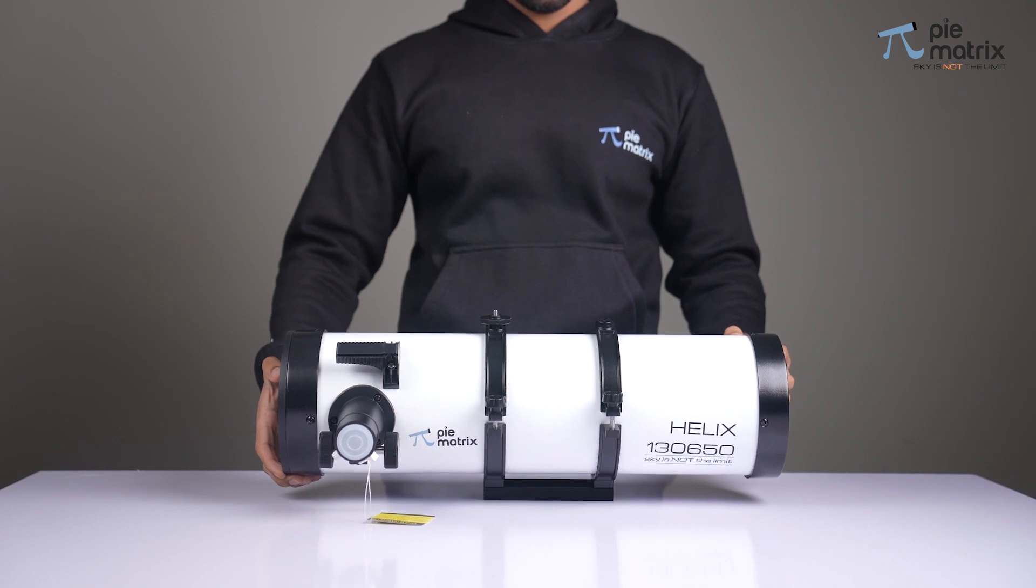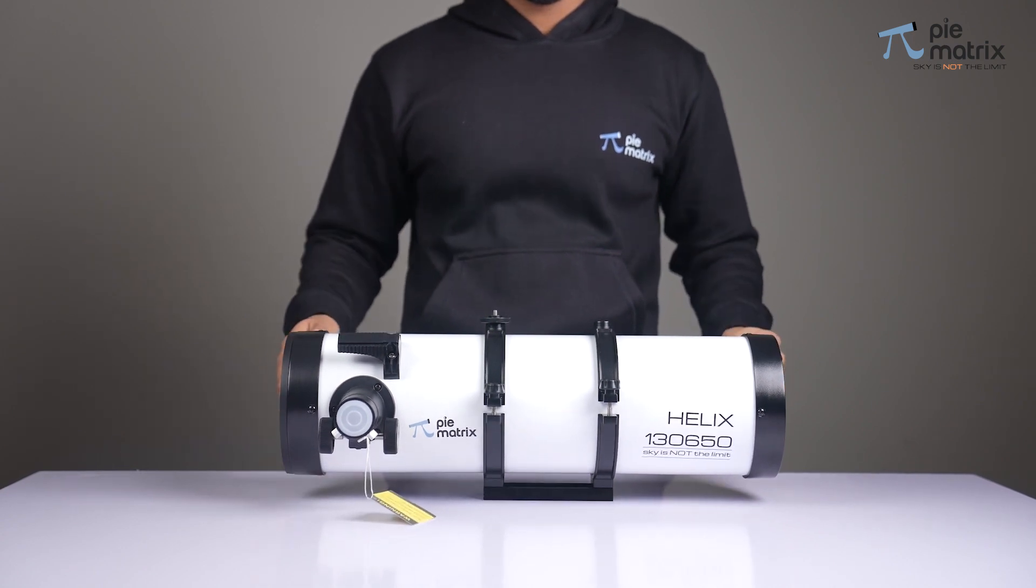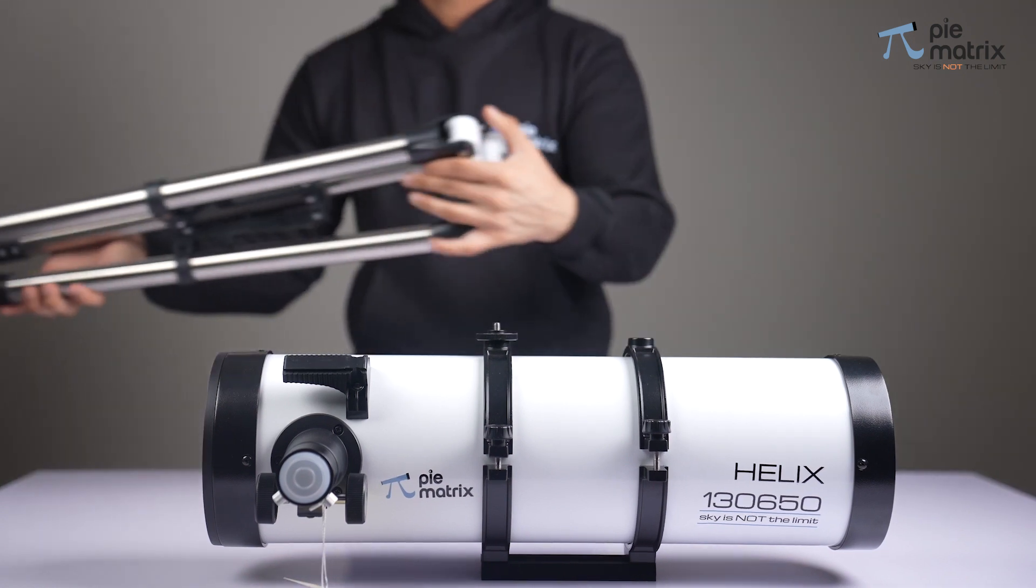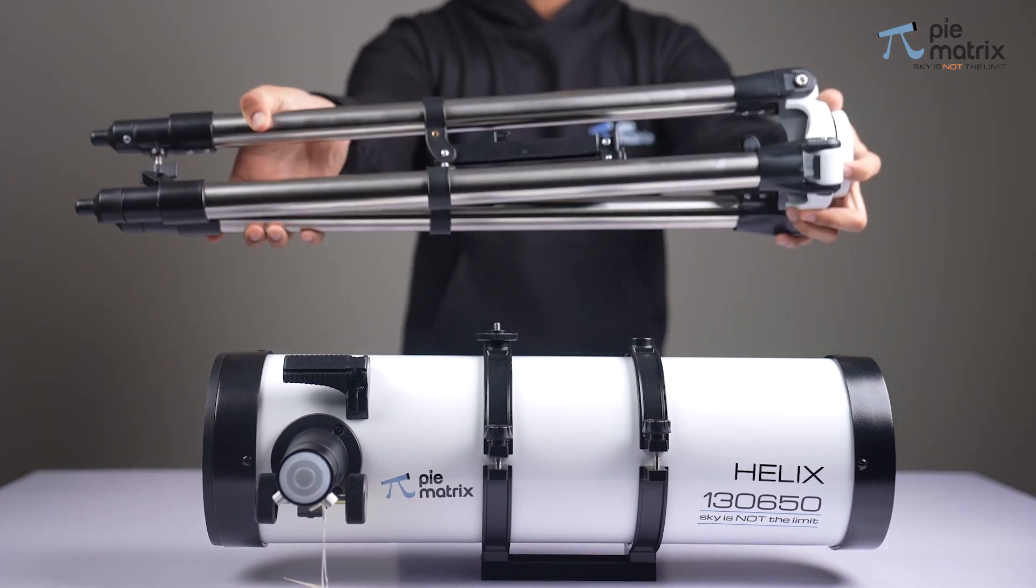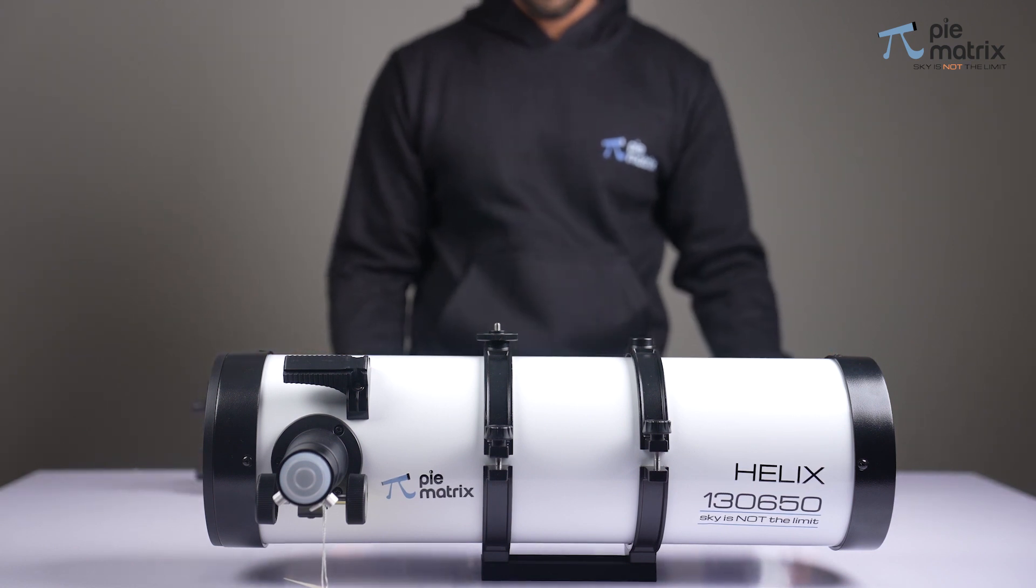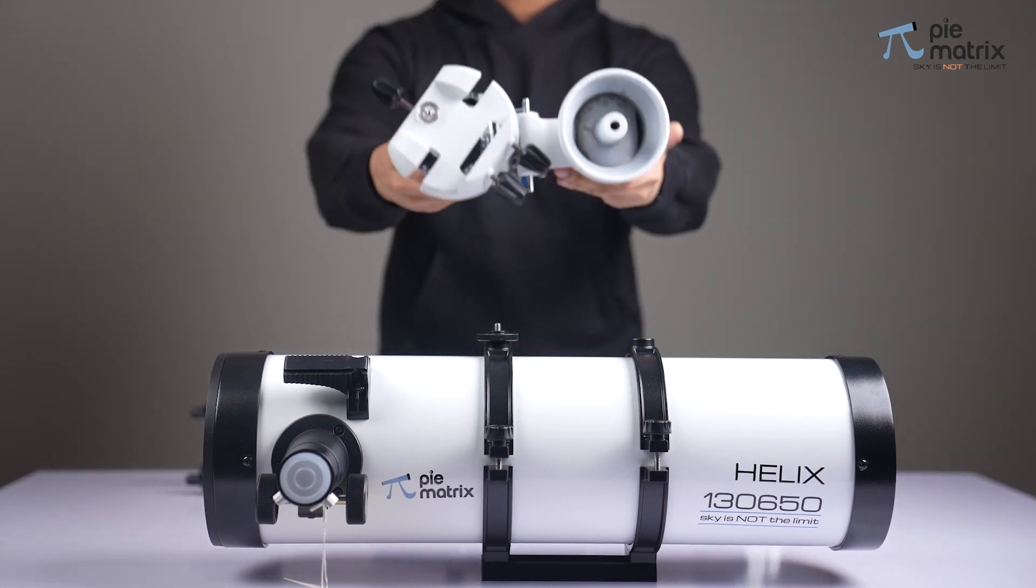First of all, we have this beautiful 130mm reflective optical tube assembly, or the OTA, and a heavy-duty stainless steel tripod, a 3-axis German equatorial mount.